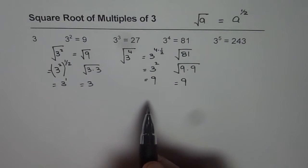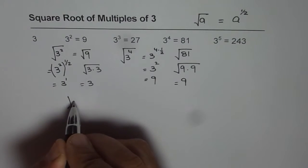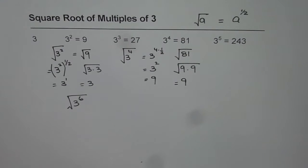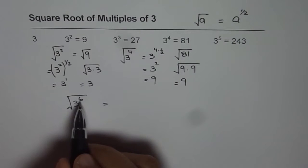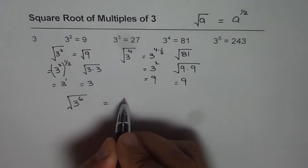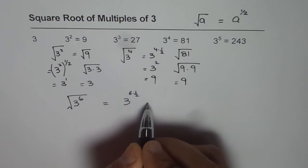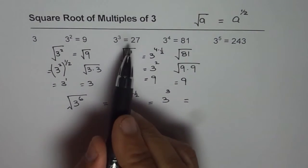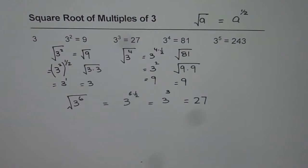Now here is an exercise for you. Try to find the square root of 3 to the power of 6. Since we have learned that the square root of an exponent should be half the exponent, it should be 3 to the power of — what is half of 6? Half of 6 is 3. So it is 3 to the power of 3, and therefore our answer is 27. So 27 is the square root of 3 to the power of 6.